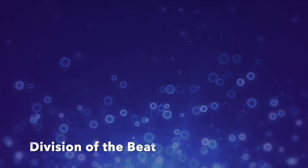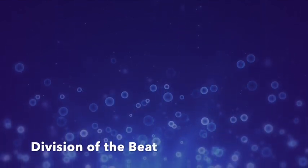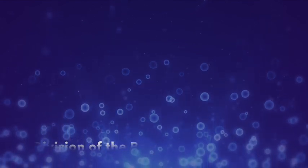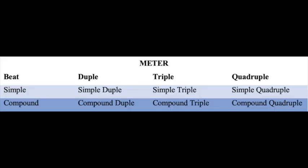Continuing on to the division of the beat. In most musical passages, we hear durations that are shorter than the beat — we call these shorter durations divisions of the beat. Beats generally divide either into two equal parts, called simple time, or into three equal parts, called compound time. Be careful not to confuse beat type, which refers to how the beat divides — simple or compound — with meter type, which refers to how the measure divides — duple, triple, or quadruple. The common beat and measure types can be combined with each other in six possible ways, as we see here.